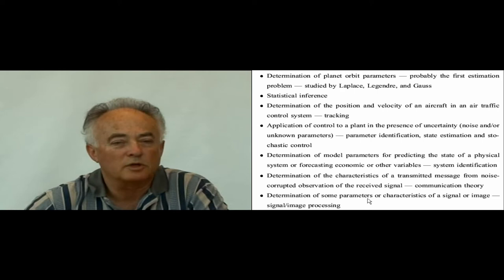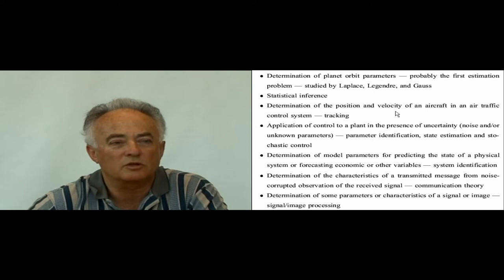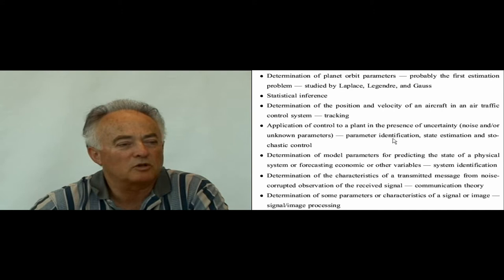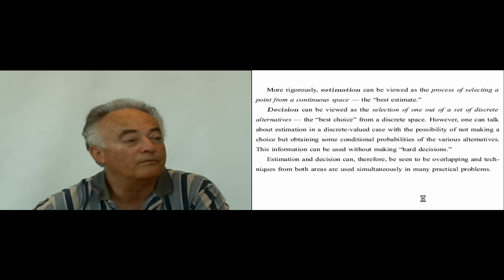Some areas where estimation has been used, starting with the oldest, go all the way back to Laplace, Legendre, and Gauss in astronomy. Statistical inference is another area. Tracking — illustrated as the determination of position and velocity of an aircraft in an air traffic control system — is another one. Control of plants in the presence of uncertainty, parameter identification, and state estimation all rely on the techniques discussed in this course. Additional areas include communication theory, signal processing, and image processing.